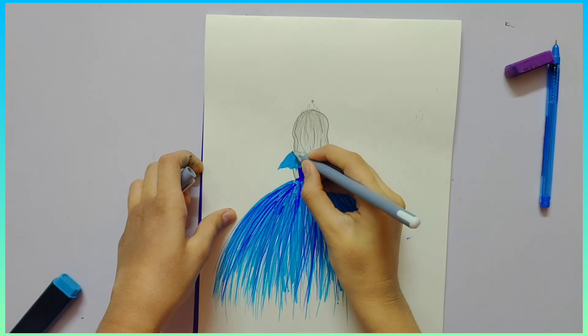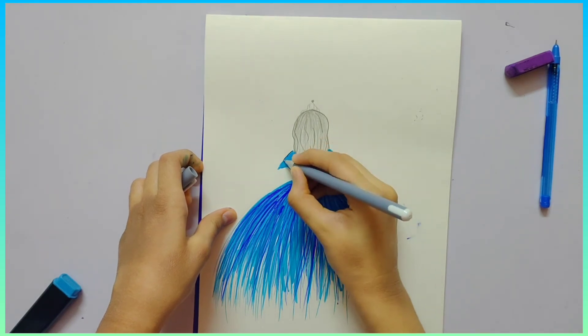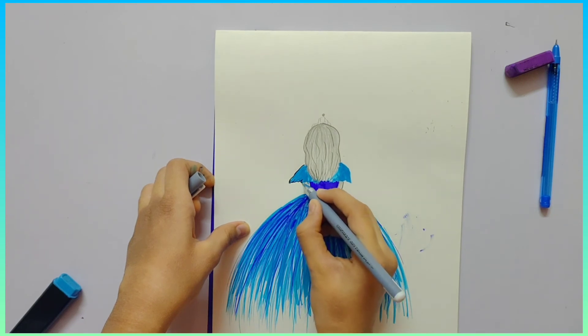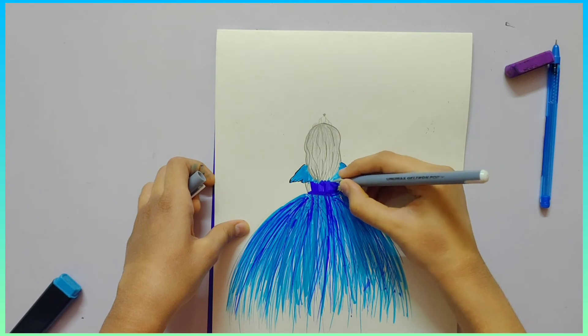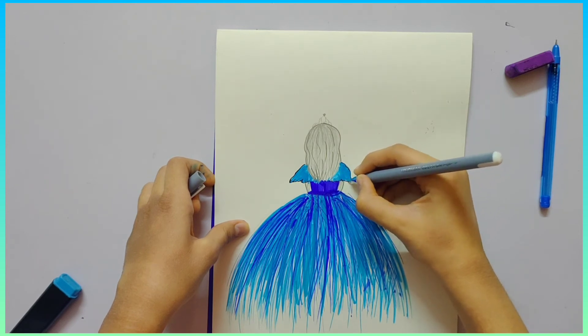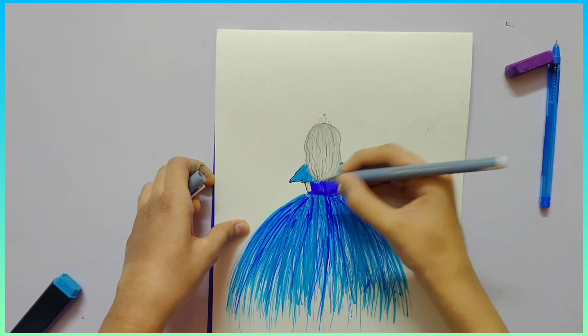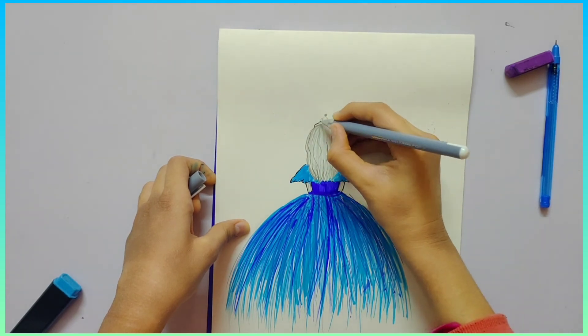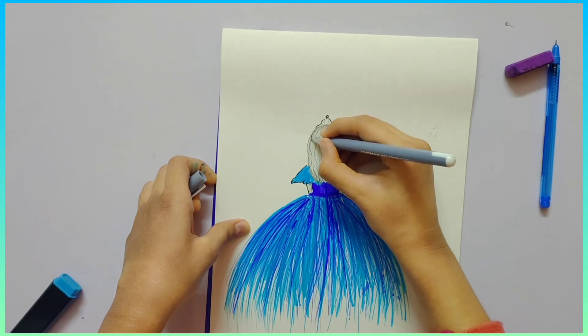Now we will just outline it with a black pen. A sketch pen would be too thick - you can use a sketch pen too, but a black pen would look more suitable and cute. We will outline the top, the hair, and the hands. Just don't outline the gown, it will look bad.